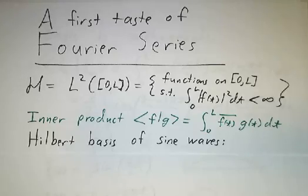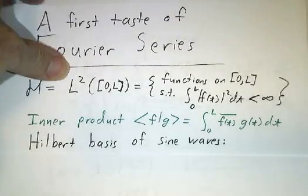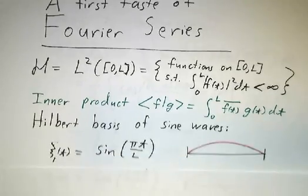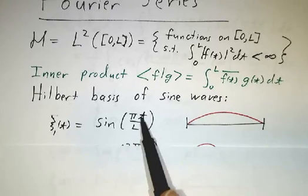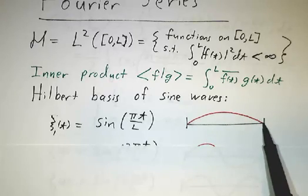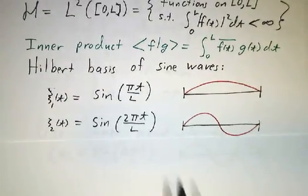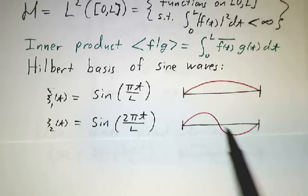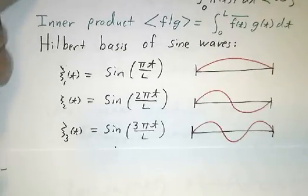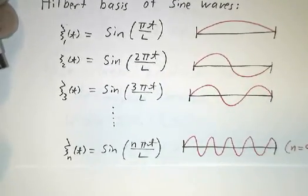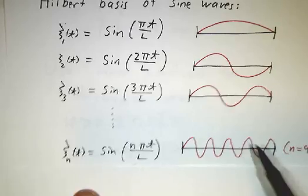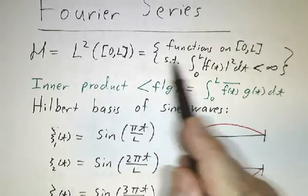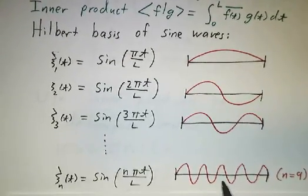I claimed in the last video that there's a basis consisting of sine waves. The first basis vector, ψ₁, is the sine wave sin(πt/L) — it starts at 0, goes up, and comes back down. The second basis vector is sin(2πt/L), which has two half-periods. Then sin(3πt/L), sin(4πt/L), sin(5πt/L), sin(6πt/L), and so on — here's a picture of sin(9πt/L). These are all vectors, meaning they're elements in the vector space of functions.